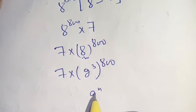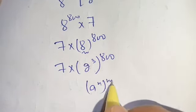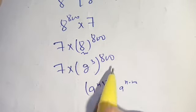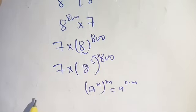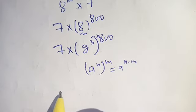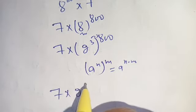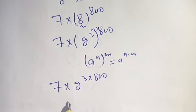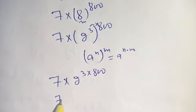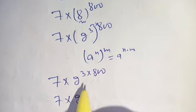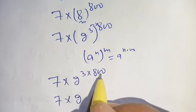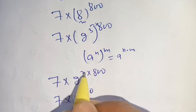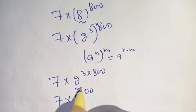We know that a power n bracket power m is equal to a power n times m, which means that we multiply the power and our resultant will become 7 times 2 power 3 times 800. And it is equal to 7 times 2 power, 3 times 0 becomes 0, 3 times 0 becomes 0, and 3 times 8 becomes 24.